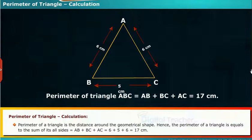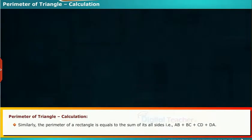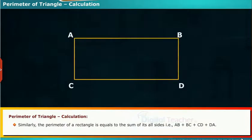Equals to 6 plus 5 plus 6, that is equal to 17 cm. Similarly, the perimeter of a rectangle is equal to the sum of its all sides, that is AB plus BC plus CD plus DA.